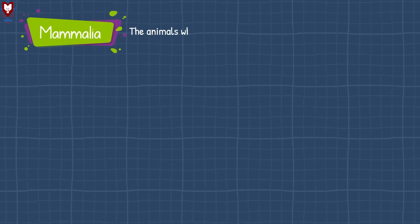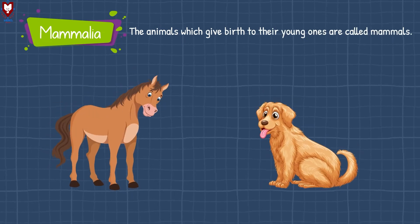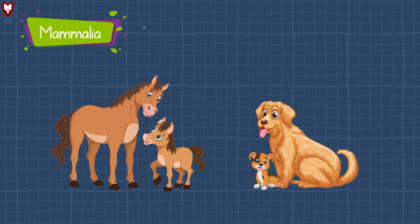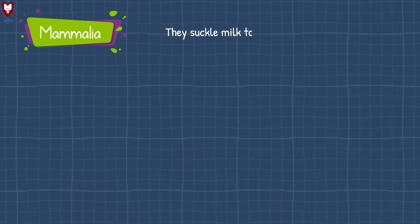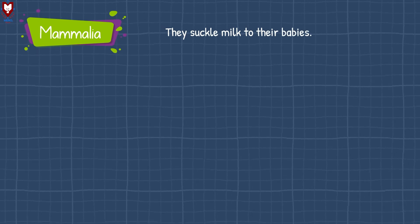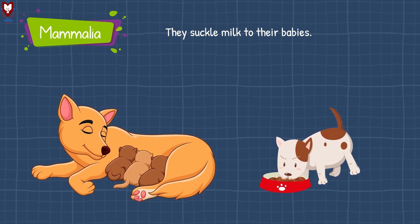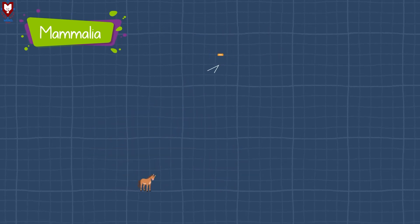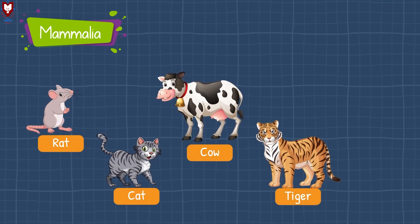The last class is Mammalia. The animals that give birth to their young ones are called mammals. Their body is covered with hair and fur. They suckle milk to their babies. Some examples are cat, rat, cow, and tiger, including humans.